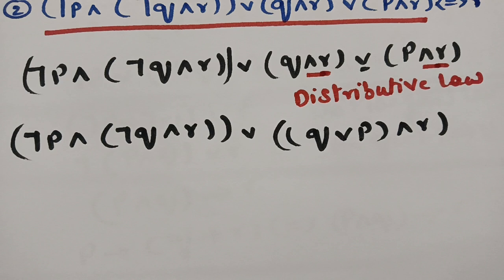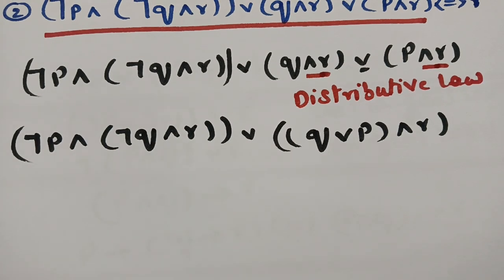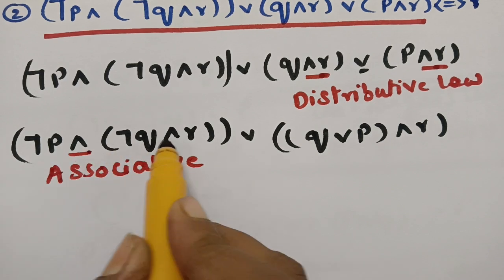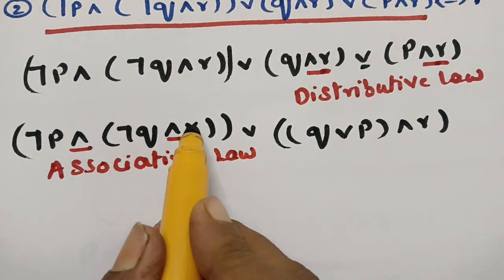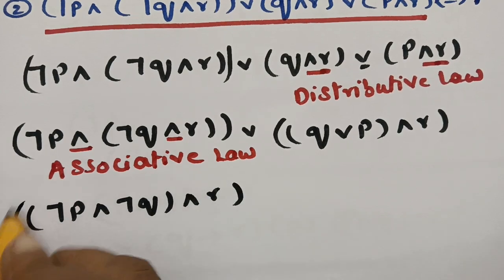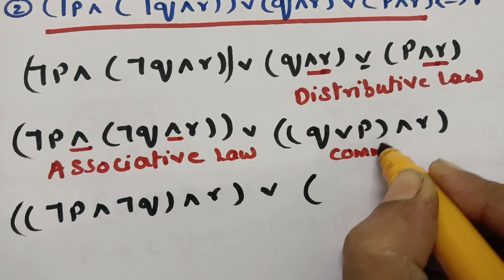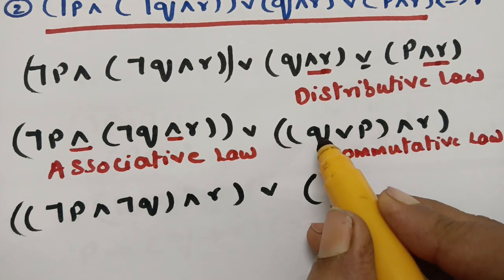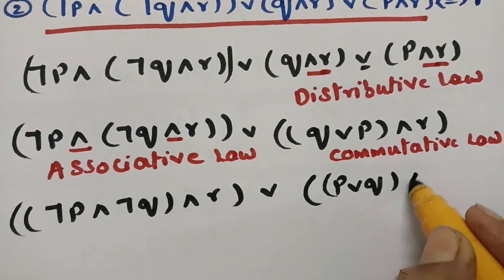Next I need the associative law. Since both connectives are 'and', I can shift the brackets to the first two terms. Then I apply the commutative law: Q or P is equal to P or Q. So I write P or Q in place of Q or P. This gives: (negation P and negation Q) and R, or (P or Q) and R.